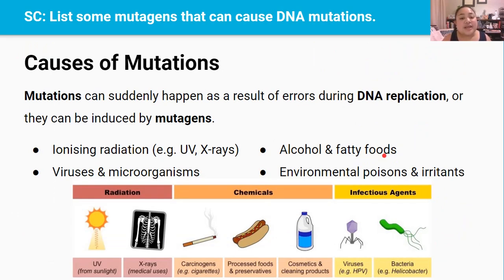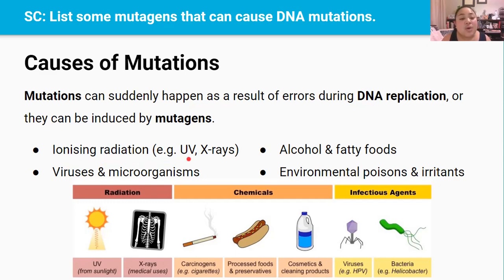So what causes mutations? Mutations can suddenly happen as a result of errors during DNA replication, which we learned about in the 2.4 series. But mutations can also happen because of physical or chemical factors called mutagens. Examples of mutagens are ionizing radiation, like nuclear radiation from a nuclear fallout, or ultraviolet or UV radiation from the sun and tanning lamps. Ionizing radiation can also come from x-rays used for medical diagnoses and treatments. Ionizing radiation has been linked to thyroid cancers, skin cancers, and several leukemias, which are blood cancers.